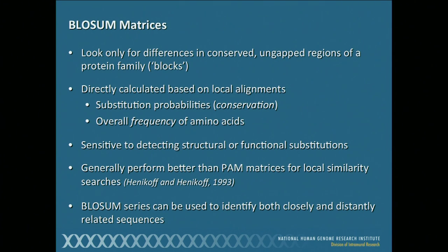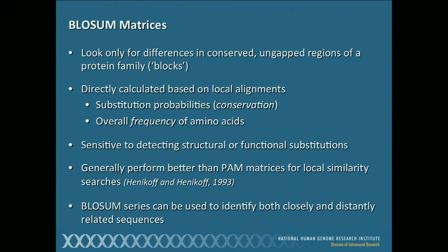Historically, in the very early days of bioinformatics, there was another series called the PAM matrices, derived at a time when very little sequence information was available, mostly based on globular proteins with a lot of extrapolations. The only reason I point that out is that especially if you're using phylogenetic programs, you'll often see them as an option, but I would instead recommend that you pick one of the BLOSUM matrices for your studies.